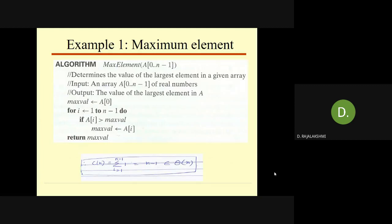The first example is the maximum element problem — finding the value of the largest element in a list of n numbers. We use a for loop. Initially, the very first element is stored in the variable maxval. Inside the for loop, maxval is compared with all remaining values in the array, always keeping the largest element in maxval. After all comparisons, maxval is returned as the output. This is a non-recursive algorithm.